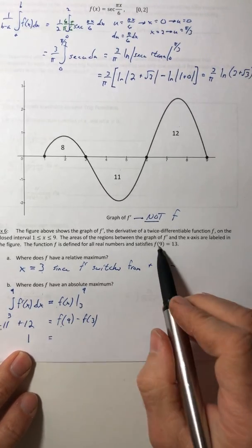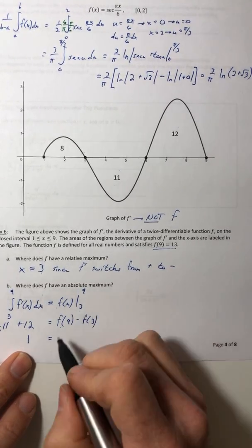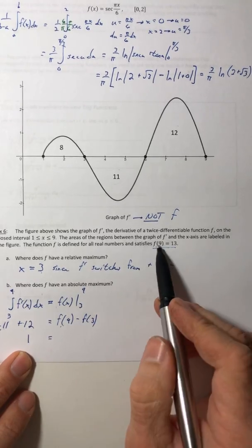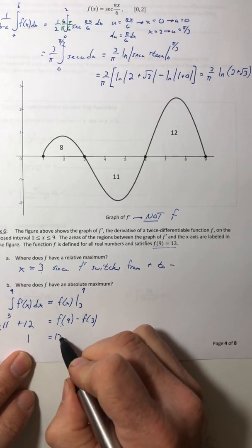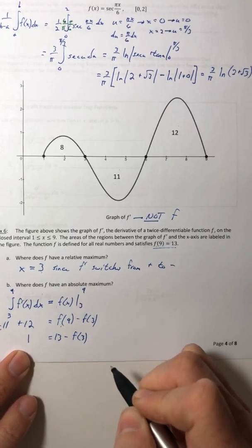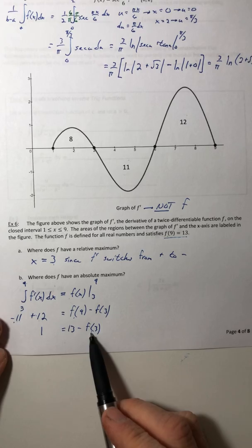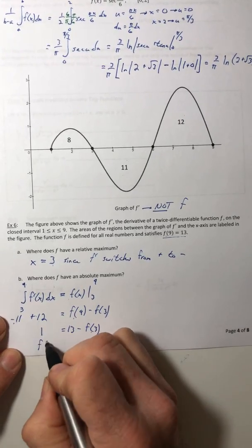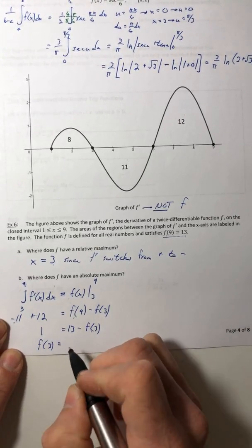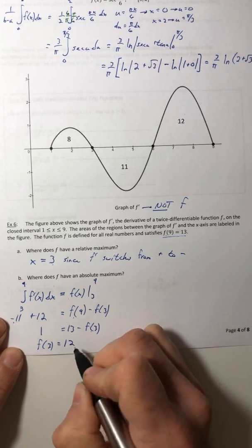Back on the left side, negative 11 plus 12, that's normally 1. Now f of 9, they gave that to me. That's why I went to the 9, because I know f of 9 is 13. I don't know f of 3, but that's okay because now I can solve for it. Now I just do the algebra. So f of 3 is going to actually equal 12.